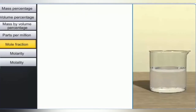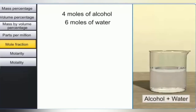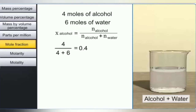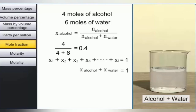For example, if a solution contains 4 moles of alcohol and 6 moles of water, the mole fraction of alcohol is calculated by substituting the values in the formula. Thus, mole fraction of alcohol equals 4 divided by (4 plus 6), which equals 0.4. Since the sum of all mole fractions equals 1, the mole fraction of water is 1 minus 0.4, which equals 0.6. Note that the mole fraction is a dimensionless quantity.